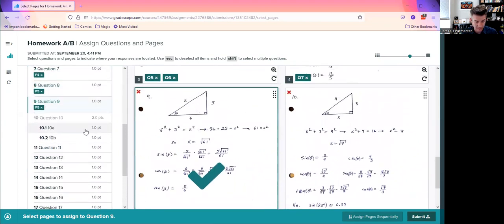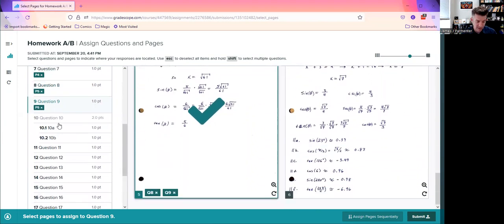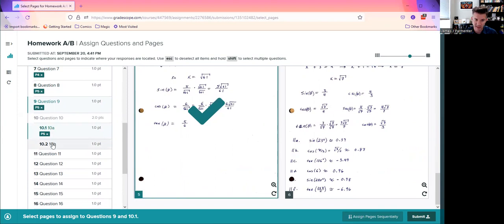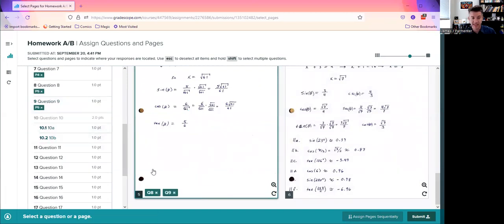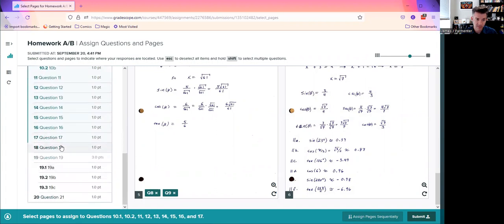So if I accidentally hit shift right now and start clicking, look what happens. Oh, they start going on this page that's selected. That's not what I actually wanted. So I'm going to close those there so that they're not there. I'm going to hit escape. Now it's unselected. Now I can go ahead and hit shift and start selecting all the questions that I want to go on the last page. I've selected them all. And then I have to select the page. Boom.